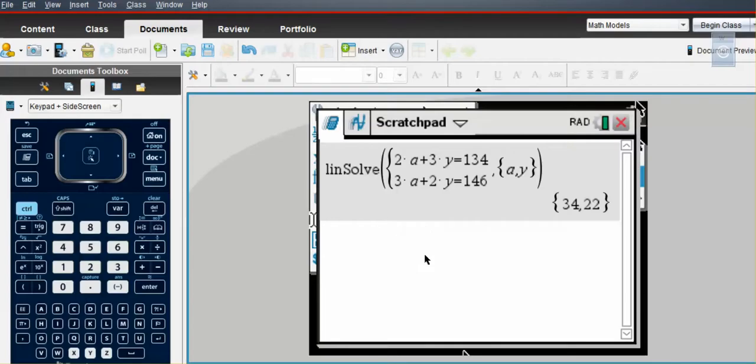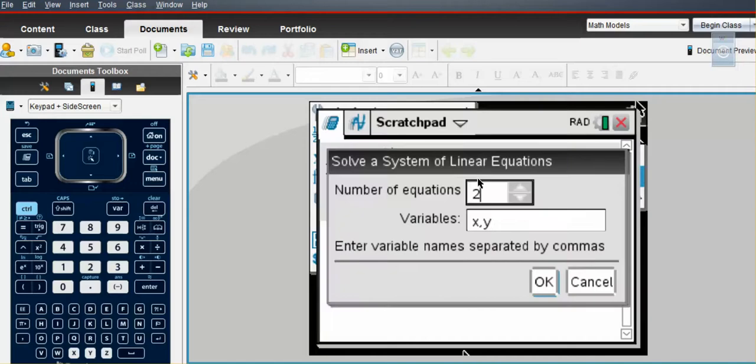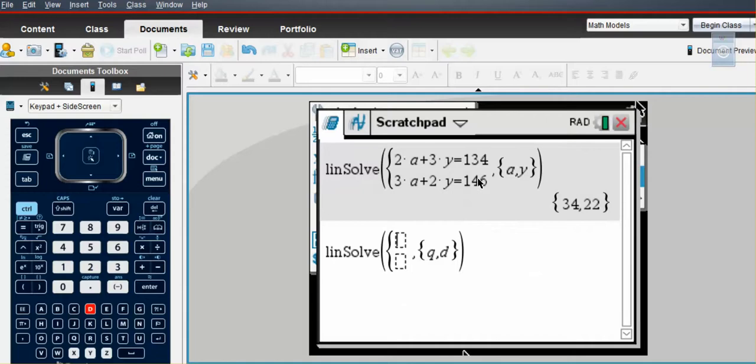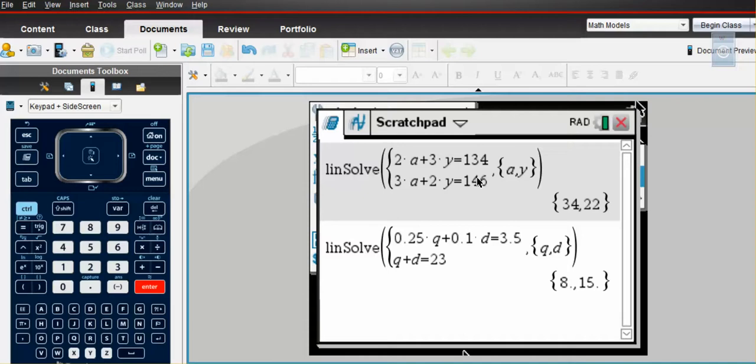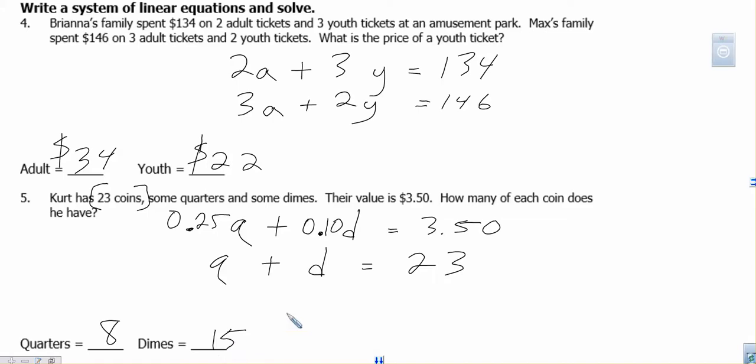So we've got .25Q. So menu, algebra, solve a system of linear equations. Two equations. I'm going to type in Q comma D. That's what we're going to use. So 0.25Q plus 0.10D equals $3.50. And we also know Q plus D equals 23. Just make sure of that. All that's good. 8, 15. So that means 8 quarters and 15 dimes. 8 quarters, 15 dimes. Again, this is really just a really good way to check this and to do some of these problems fast. But if you're asked to work them out, you have to work them out.